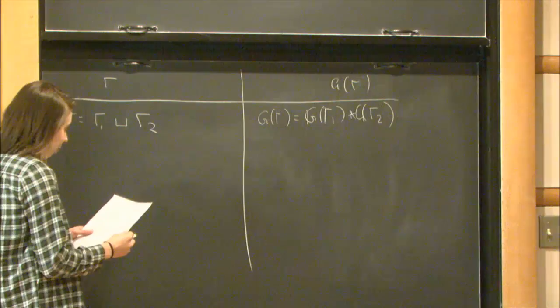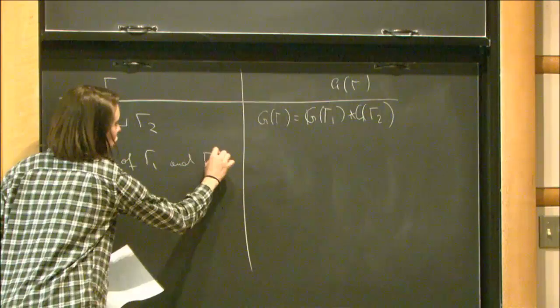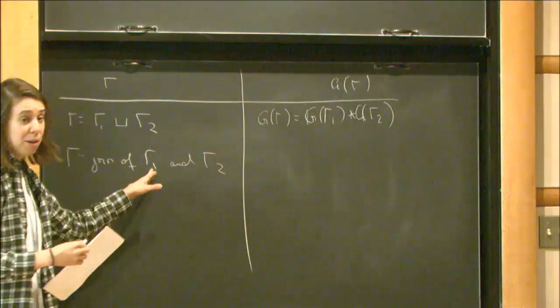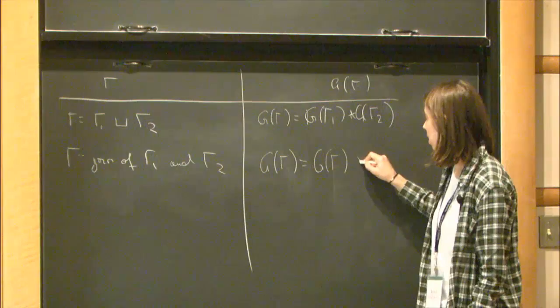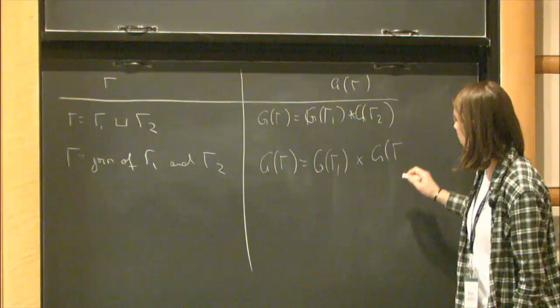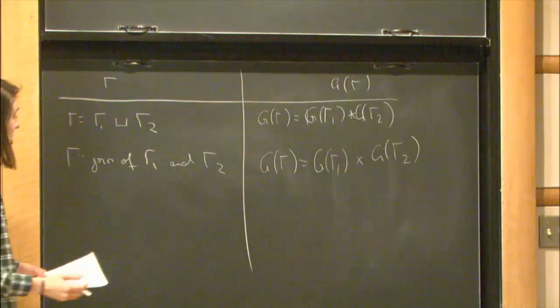Another property: if gamma is a join of two graphs — meaning every vertex in one part is connected to every vertex in the other part — then the group G(gamma) is the direct product of G(gamma₁) and G(gamma₂). The complete graph example was a special case of this.